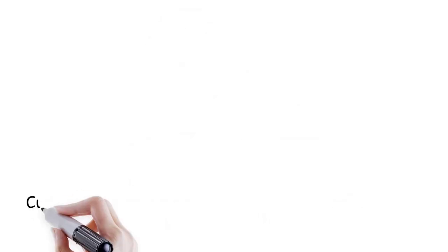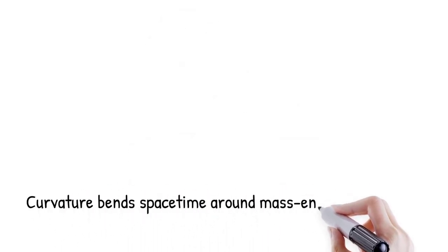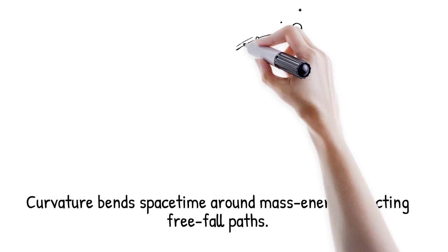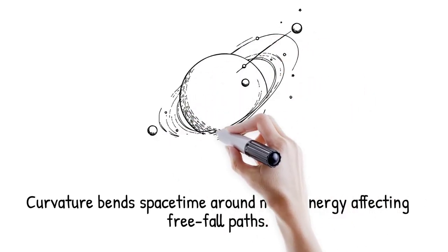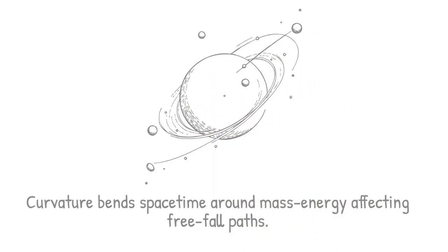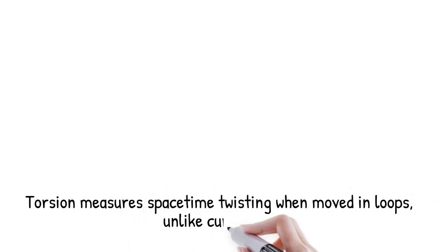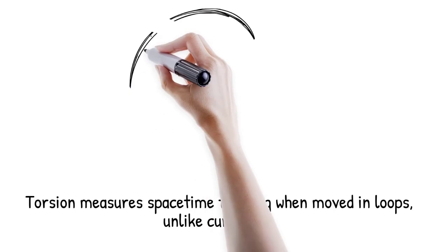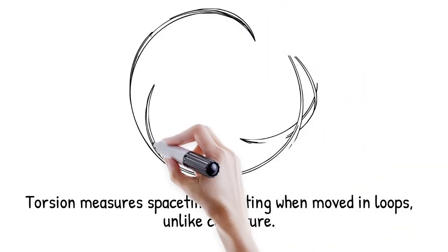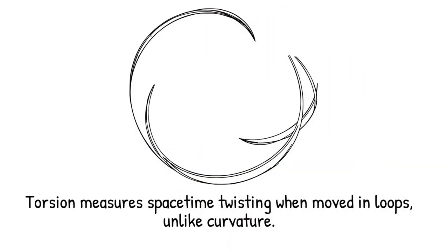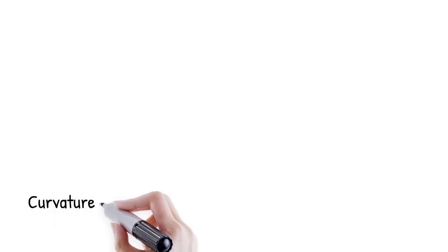In general relativity, curvature describes how space-time bends around mass energy, affecting the paths of freely falling objects, while torsion measures how space-time elements twist when moved in loops. A property absent in Einstein's formulation, but present in gauge gravity extensions.